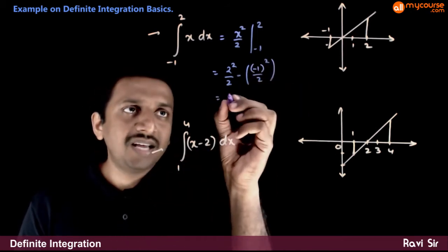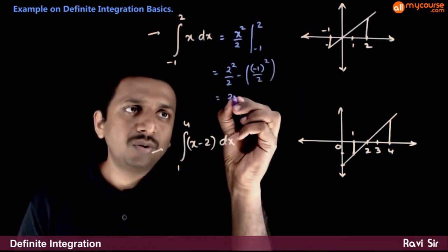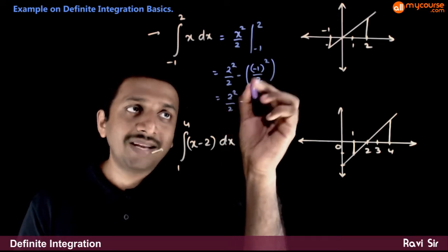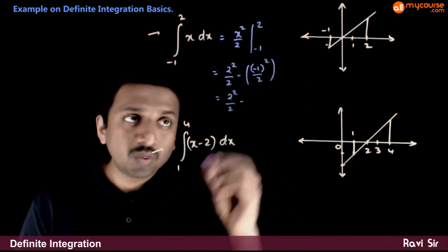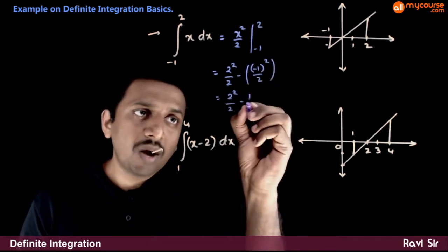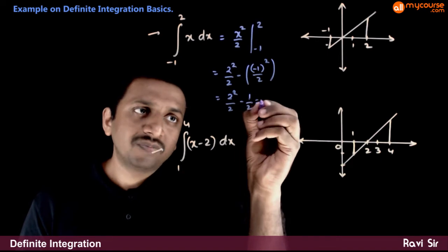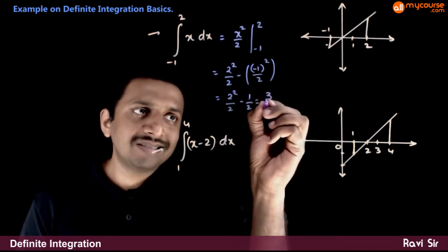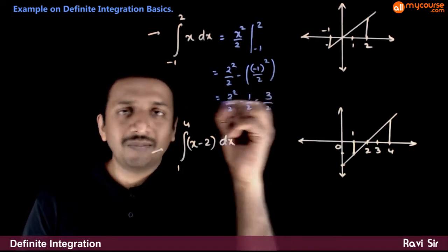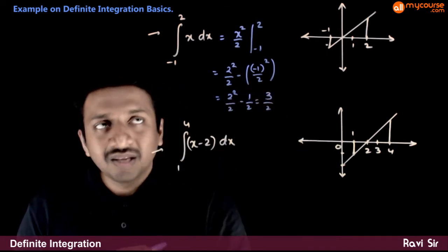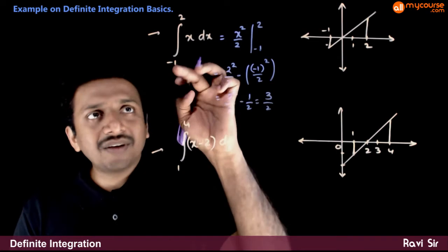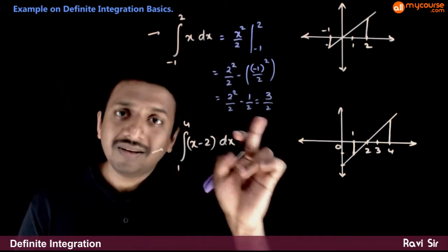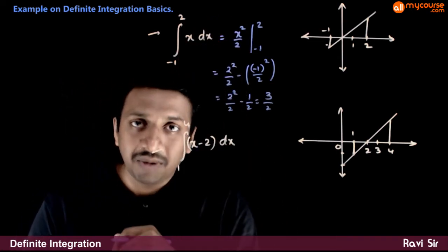That is equal to 2 square by 2 minus — minus 1 whole square is 1 — 1 by 2. So, 4 minus 1 by 2 is 3 by 2. So, integration of x dx between minus 1 and 2 is equal to 3 by 2.